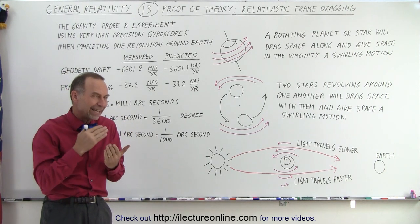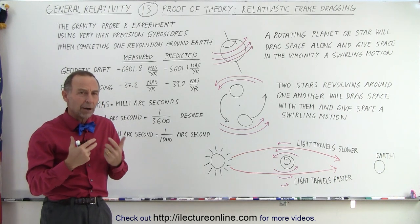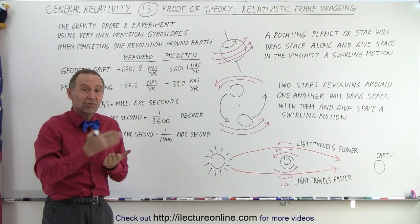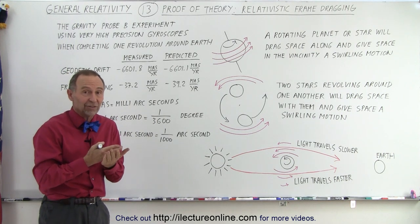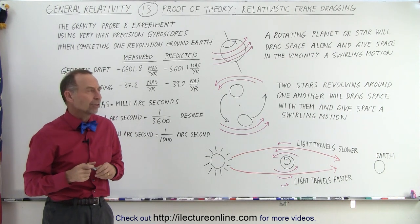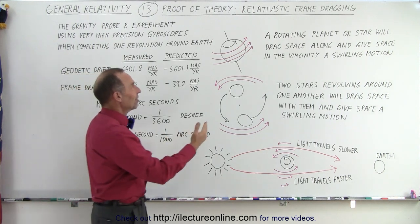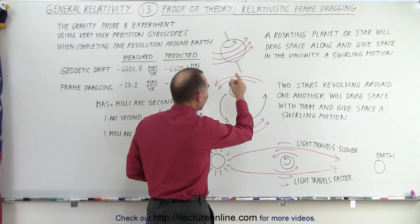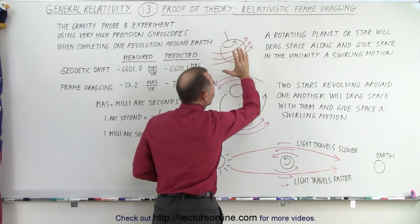We can actually calculate how much that would be — how much space is affected — and then we go and measure it, and it turns out our measured values are actually quite close to the predicted values. For example, if you have a planet or a star rotating on its axis, space around it gets dragged.